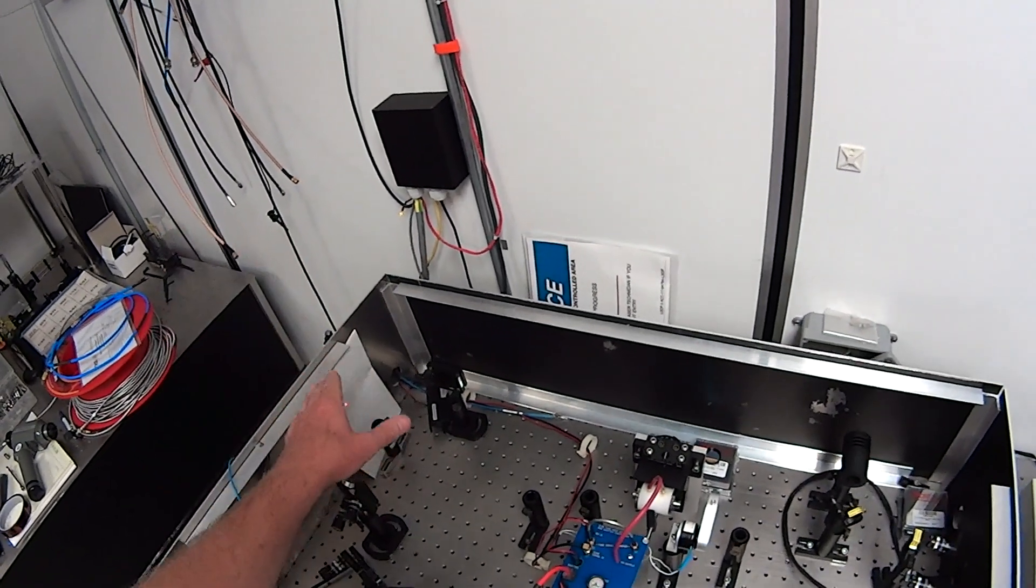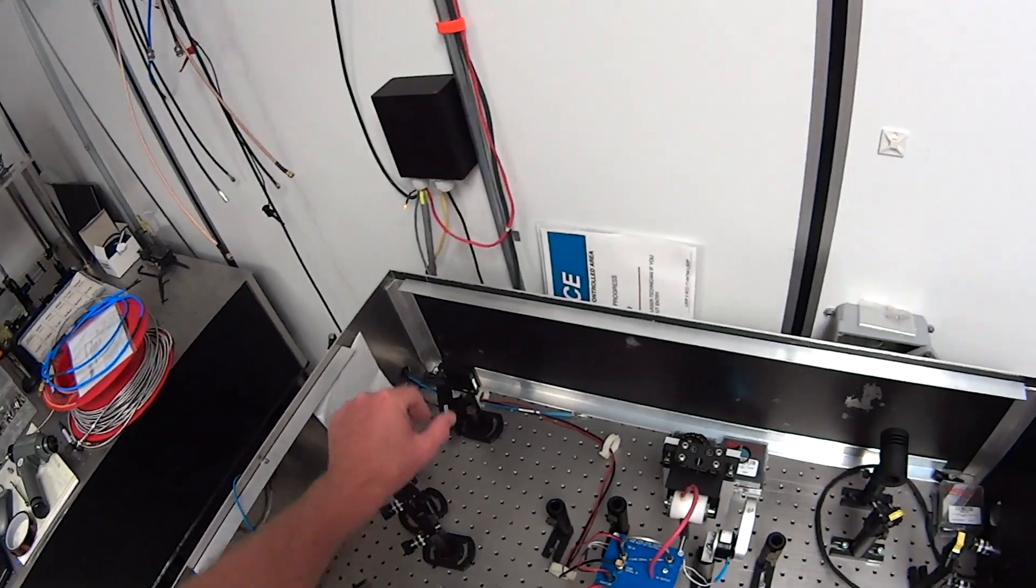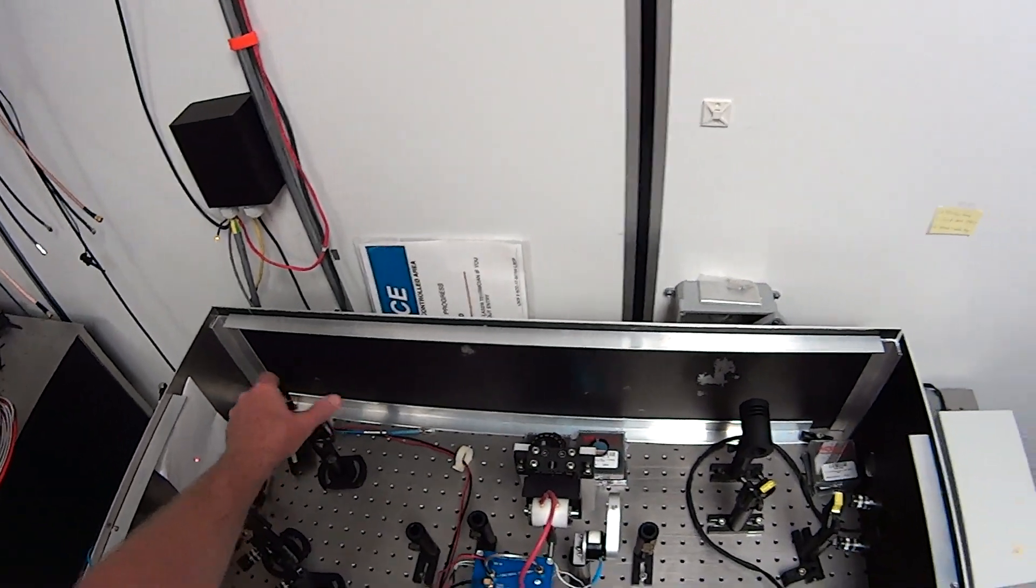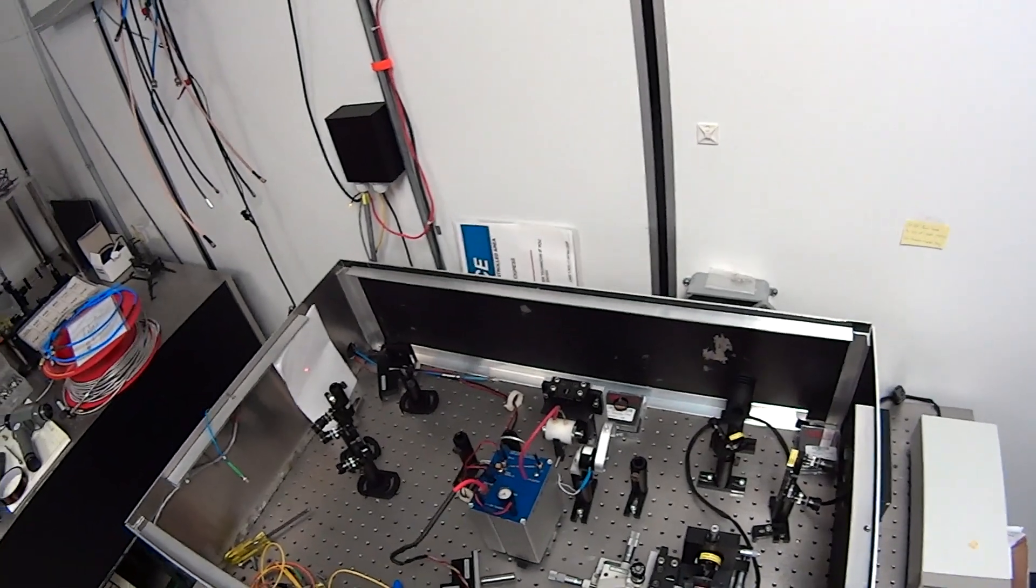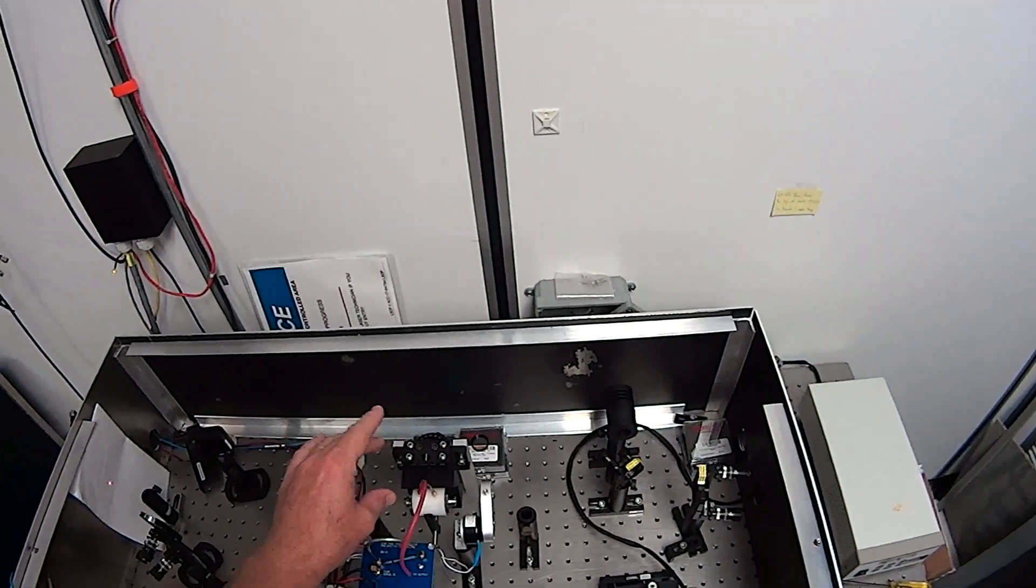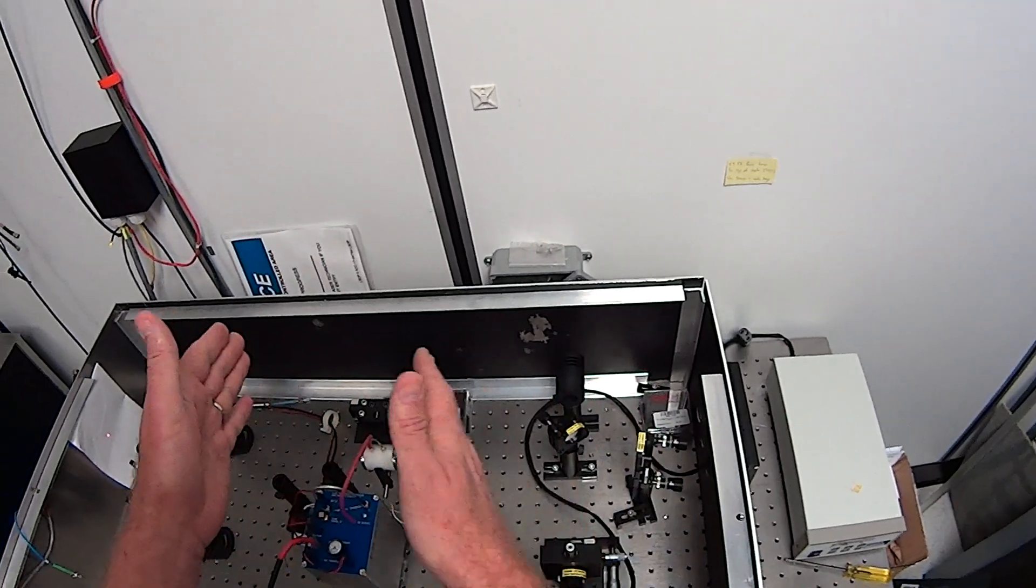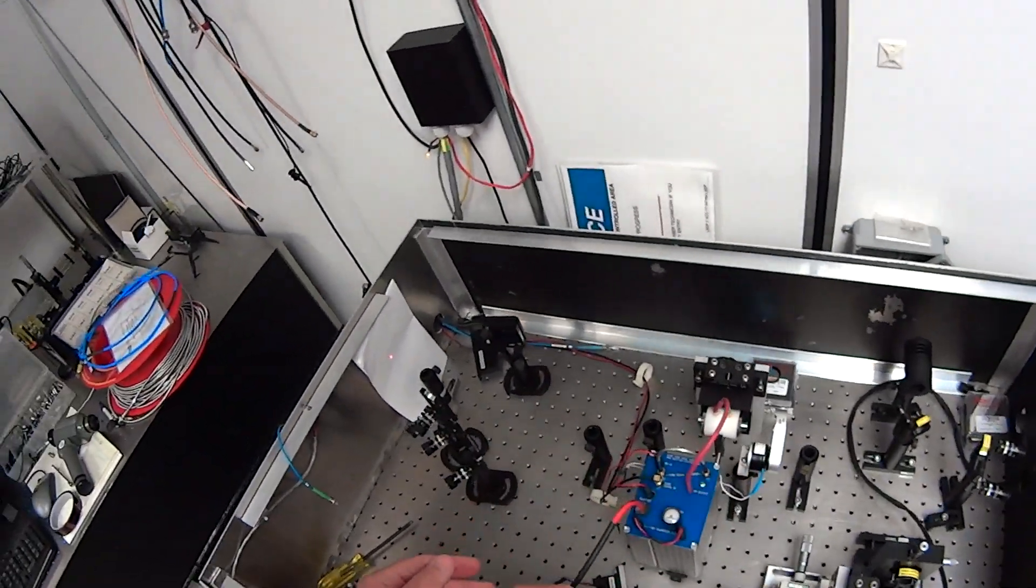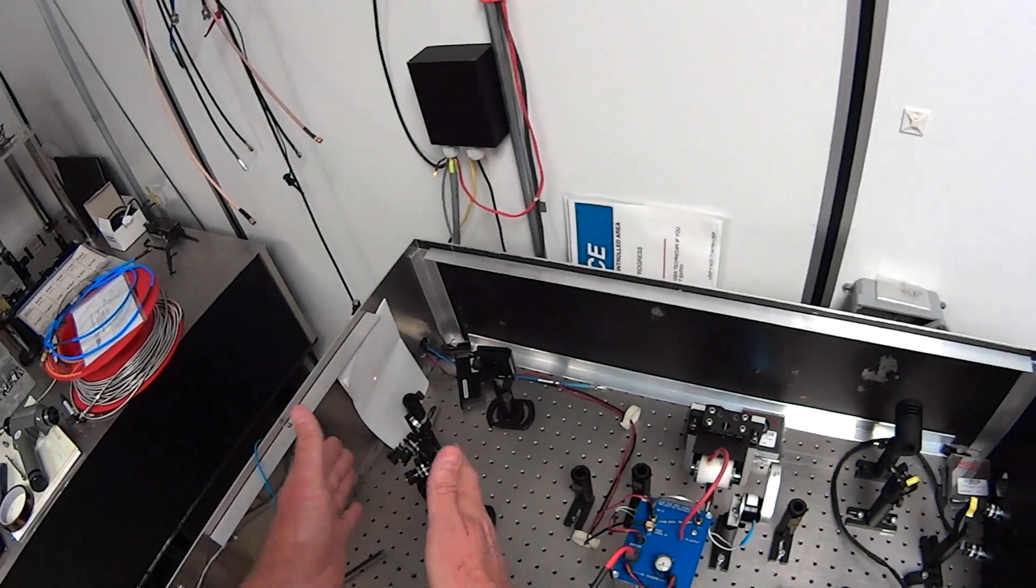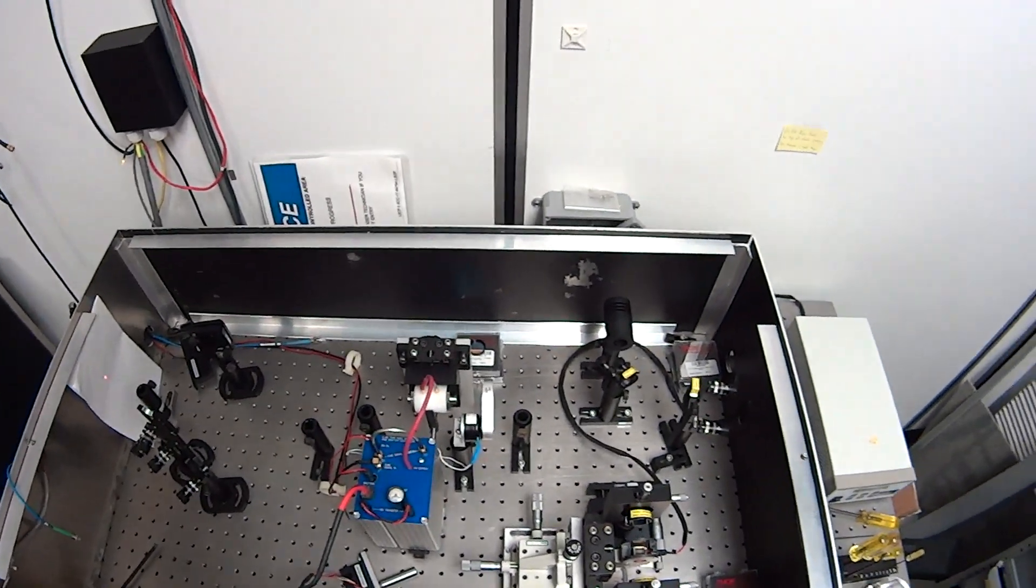And then I'm going to do the same thing here with some mirrors and launch into a fiber launch. Now I do that because once I've got it aligned through the cell, I don't want to touch anything upstream. I've done the upstream stuff to get it proper for the cell and then I only want to touch downstream stuff to get into the fiber.